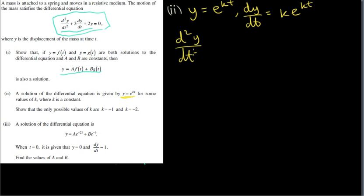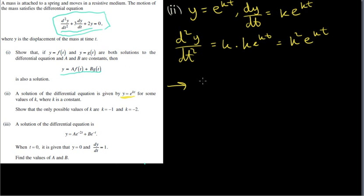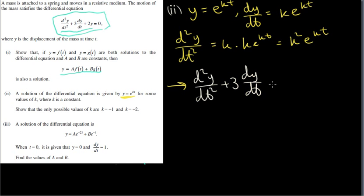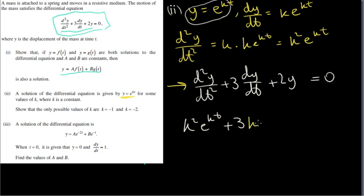And we have the second derivative: k is just a constant, so it's k times the derivative of e^(kt). The derivative of e^(kt) is k·e^(kt), so we get k²·e^(kt). Now we write down our differential equation. We know it equals zero for this solution, so we fill in everything: k²·e^(kt) + 3k·e^(kt) + 2·e^(kt) = 0.